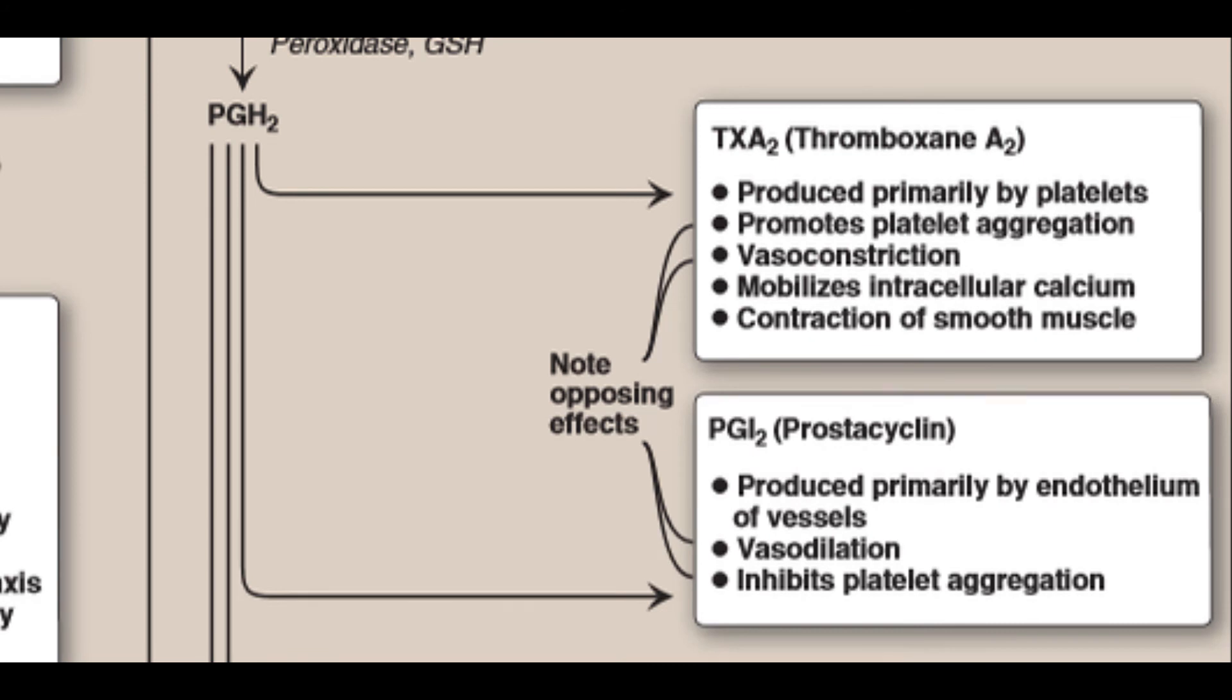Prostacyclin (PGI2) is produced by COX-2 in vascular endothelial cells. It inhibits platelet aggregation and stimulates vasodilation, impeding thrombogenesis.